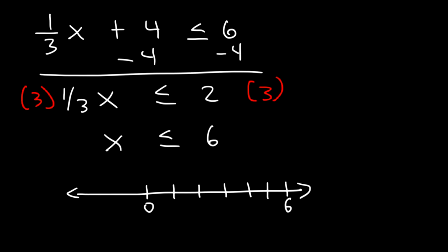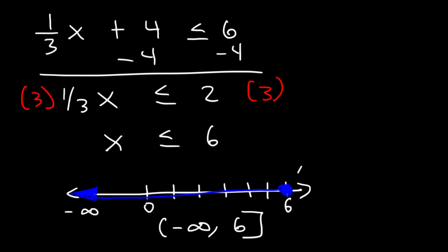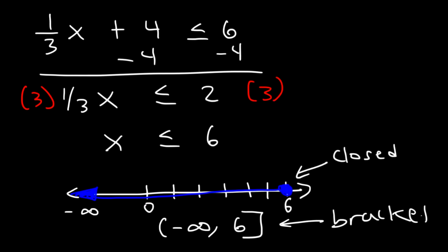This time we're going to have a closed circle. And because it's less than, we're going to shade towards the left — that is towards negative infinity. To represent the answer using interval notation, it's from negative infinity to 6. Because we have a closed circle at 6, we're going to use brackets. But keep in mind, you should always have parentheses any time you're dealing with infinity.